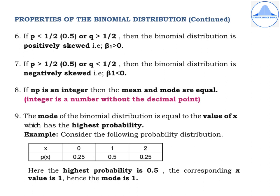The eighth property states that if NP is an integer, then the mean and mode are equal. An integer is a number without a decimal point. The ninth property: the mode of the binomial distribution is the value of x which has the highest probability. The mean and mode are equal only when NP is an integer.